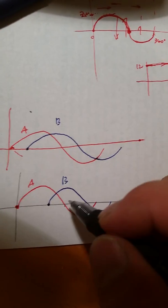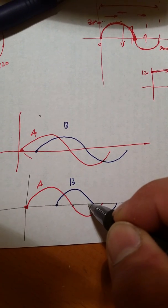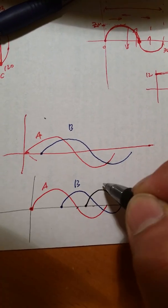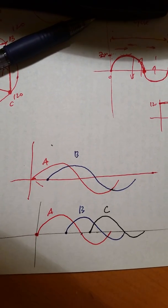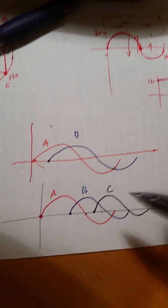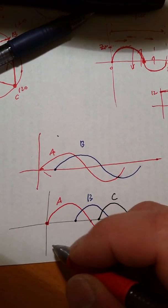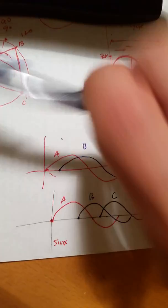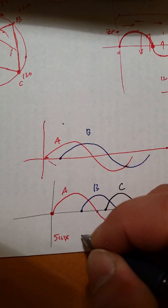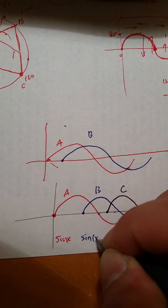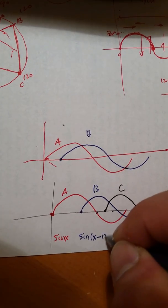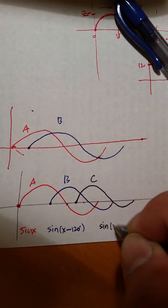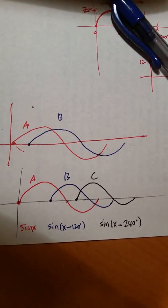And then your C phase - this is 180, C phase at 240. So this is 270 right here, so right around here is about 240. That's your C phase. Your A phase graph would be sine x. Your B phase graph would be sine of x minus 120 degrees. And your C phase graph is sine of x minus 240 degrees.